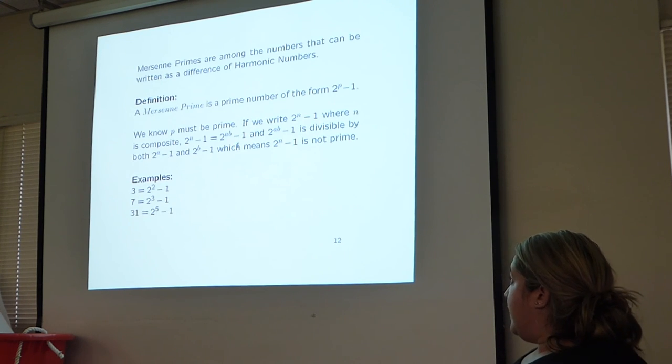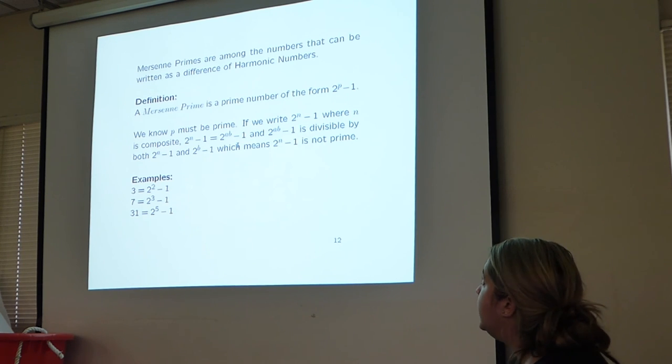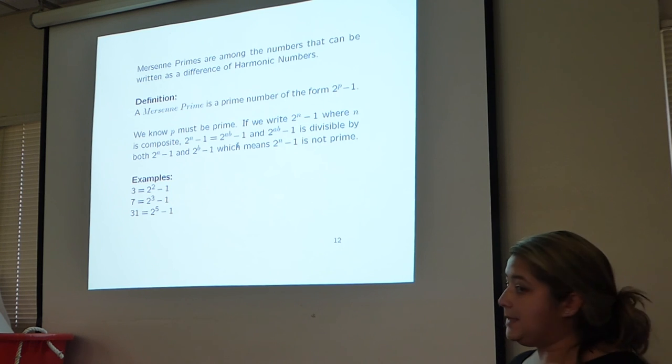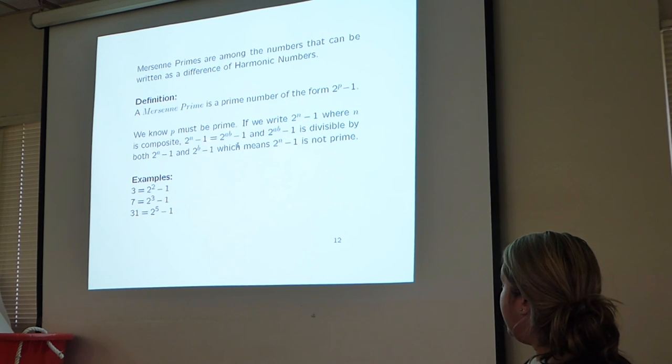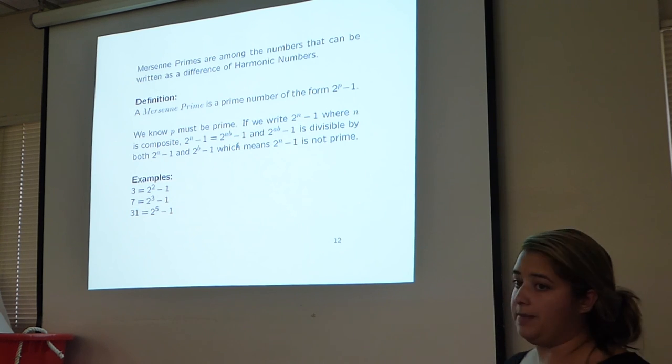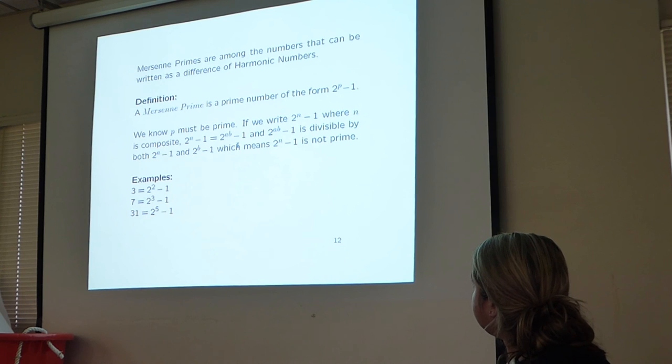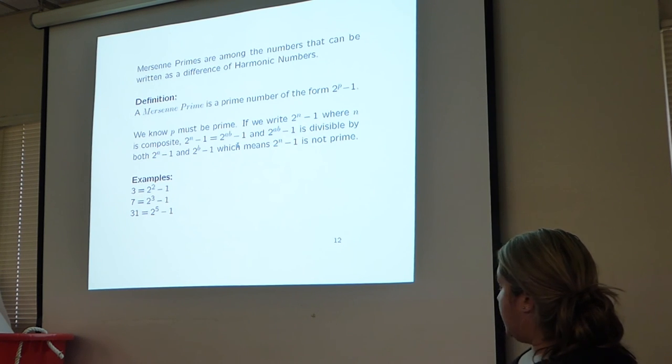We found these non-difference of harmonic numbers, but then we noticed Mersenne primes can be written as a difference of harmonic numbers. A Mersenne prime is a prime in the form of 2^p - 1. We looked at p, p must be prime, because if it was a composite number, we could write it as 2^ab. And 2^ab - 1 is divisible by both 2^a and 2^b - 1. Here are some examples of Mersenne primes: 3, 7, and 31.